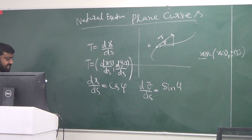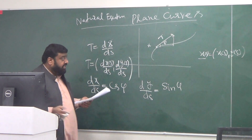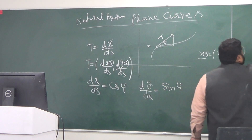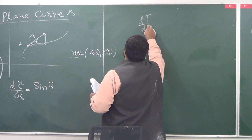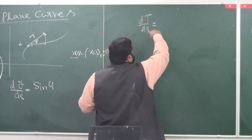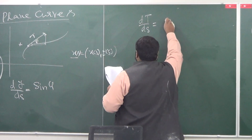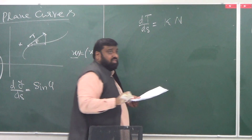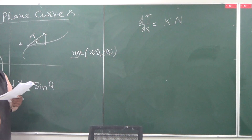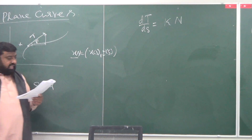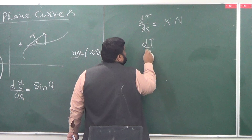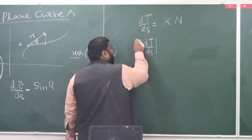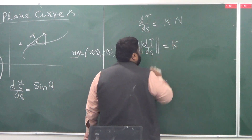Once you have this, you can do something very interesting. From the Frenet-Serret equation, if you compute dT/ds you get κ times the normal vector N. If you compute the magnitude of dT/ds, you get κ.